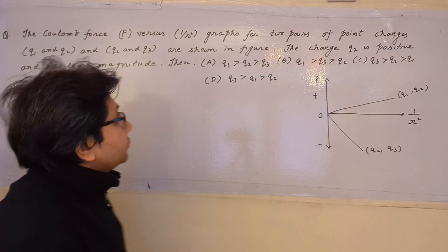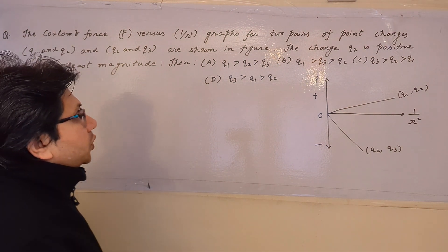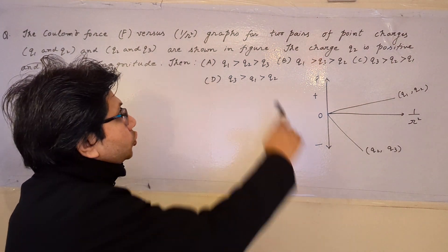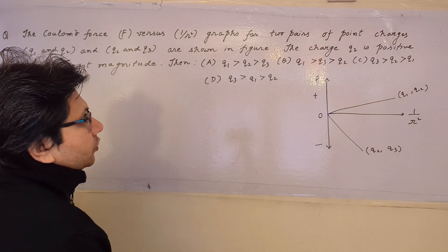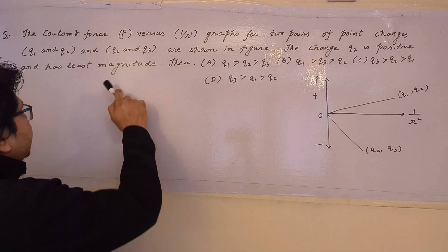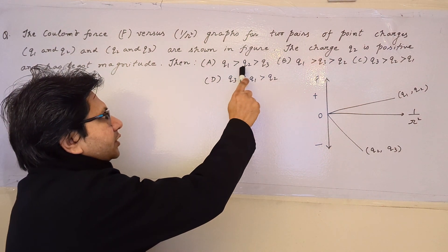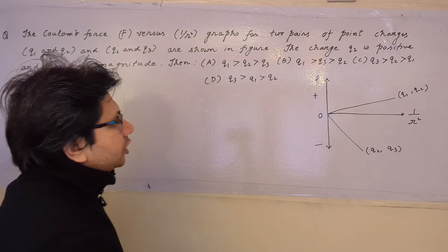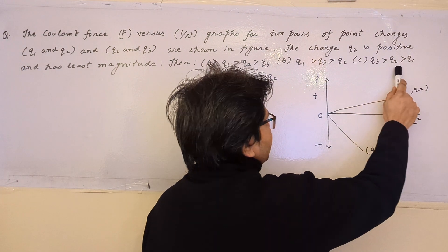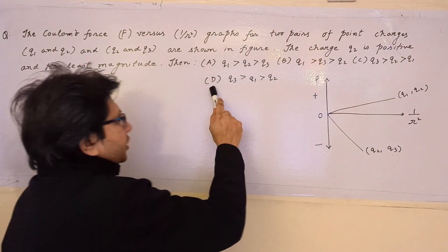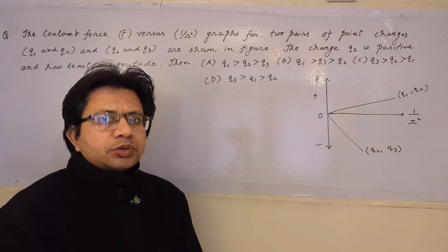The question involves Coulomb force F versus 1/r² graphs for two pairs of point charges: q1 and q2, and q2 and q3. The charge q2 is positive and has the least magnitude. The options are: (a) q1 > q2 > q3, (b) q1 > q3 > q2, (c) q3 > q2 > q1, (d) q3 > q1 > q2. This problem is based on Coulomb's law.